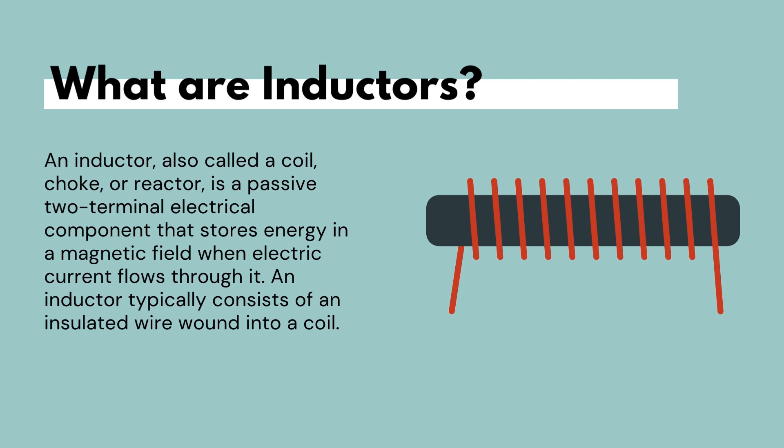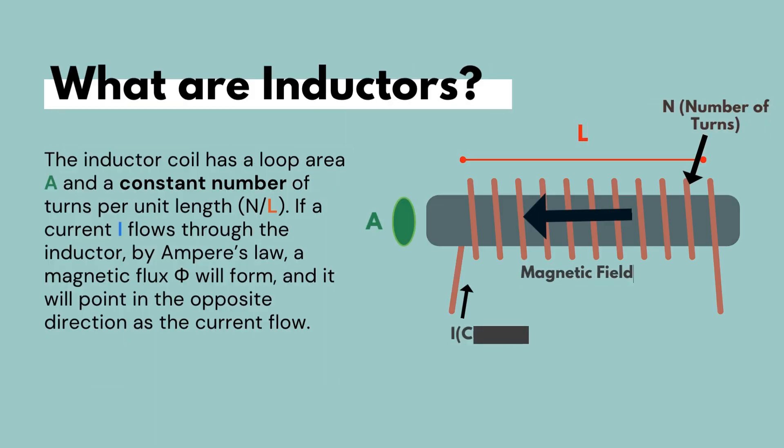According to Ampere's law, if current flows through an inductor, magnetic flux will form and it will point in the opposite direction of the current flow. Looking at this inductor, we can see that there is a cross-sectional area, which we will denote by the letter A. The inductor has a length denoted by the letter l, and the number of turns that the wire has been wound up into a coil is denoted by the letter N.